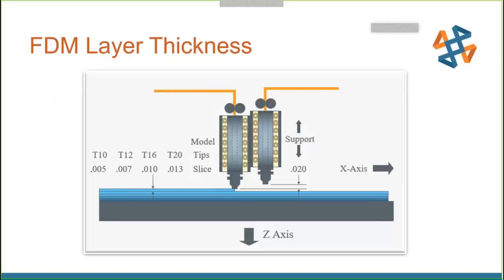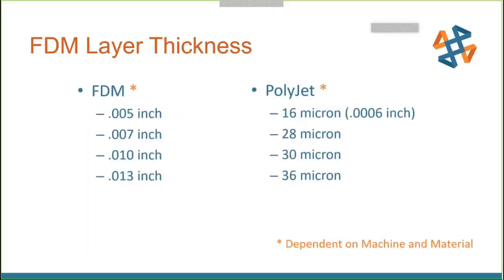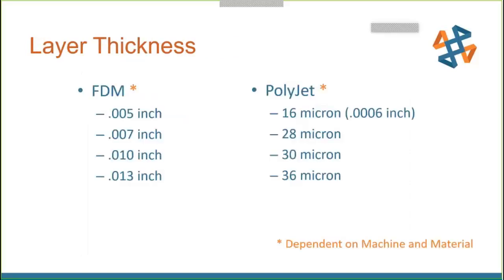With FDM, you're limited to layer sizes. Typically you can do 5, 7, 10, or 13 thousandths layers. These are dependent on the machine and material. For example, with ABS you can do 5, 7, 10, and 13 thousandths, but with Ultem you're limited to 10 and 13 thousandths. For PolyJet, layers go down to 16 micron — very fine detail — with options at 28, 30, and 36 micron, again depending on machine and material.